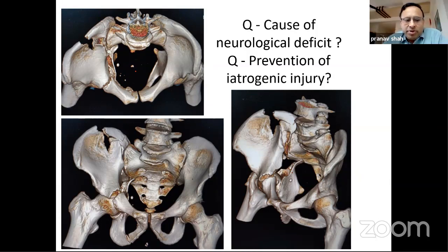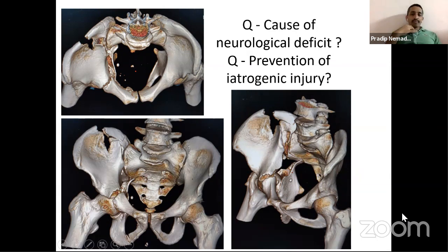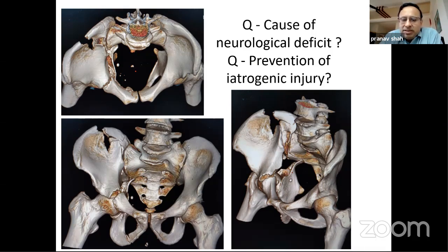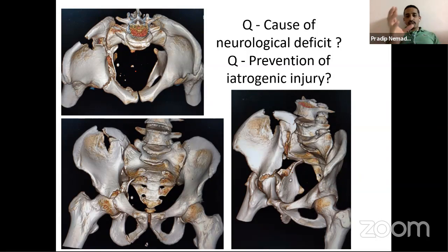Question to Dr. Pradeep Nemare: Can the sciatic nerve be visualized through the Stoppa approach to ensure it is not entrapped? Dr. Nemare replies: if the nerve is inside the field it may be visible, but if very posterior it cannot be predicted. He would not apply a clamp without seeing the full fracture length and prefers a dual approach in such cases — going posteriorly by KL approach if the path for the ischial fragment is not safe.